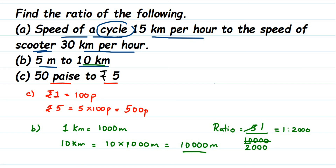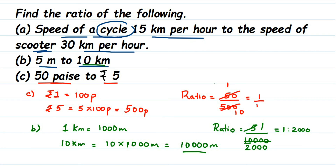Now find the ratio: first we have 50 paise, so 50 by 5 rupees. We know 5 rupees is 500 paise, so it becomes 50 by 500. Cancel them in the 50 table — 50 ones are 50 and 50 tens are 500 — so we get 1 by 10. Written as a ratio, this is 1 is to 10.